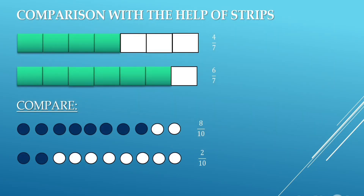Comparison with the help of strips. As we can see, in both strips there are 7 equal parts. In the first strip, 4 parts are shaded — fraction is 4 upon 7. In the second strip, 6 parts are shaded — fraction is 6 upon 7. Since 4 shaded parts are less than 6 shaded parts, 4 upon 7 is less than 6 upon 7. Now compare 8 upon 10 and 2 upon 10: 8 shaded circles are greater than 2 shaded circles, so 8 upon 10 is greater than 2 upon 10.